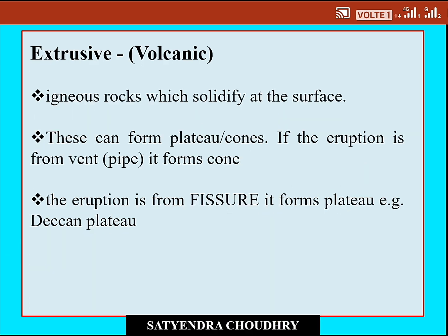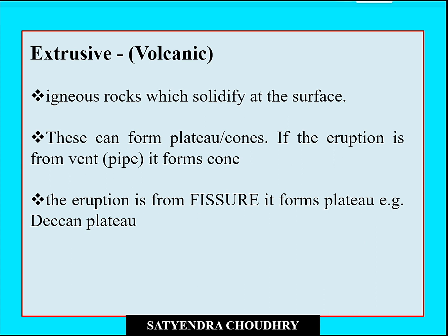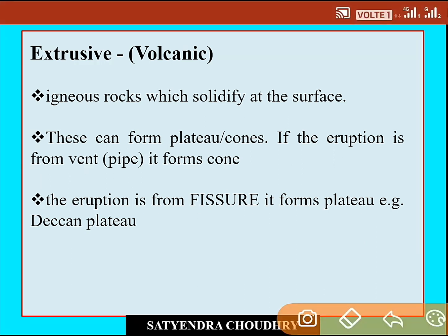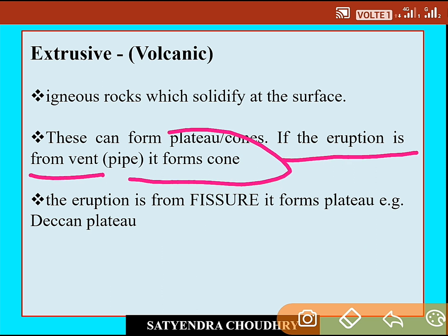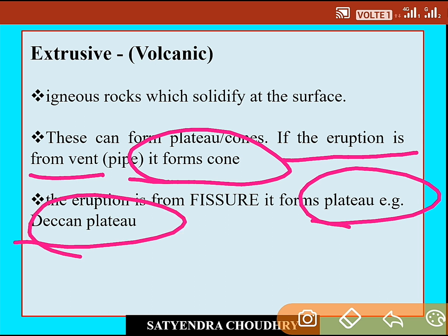On the other hand, in volcanic eruptions, molten material solidifies at the earth's surface. These can form a plateau or a cone. If the eruption is from a vent, it will form a cone; if the eruption is from a fissure, it will form a plateau — for example, the Deccan Plateau.